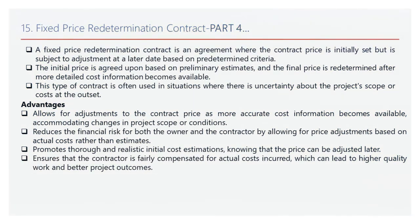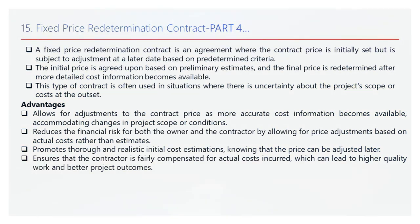Advantages. Flexibility for adjustments: as more accurate cost information becomes available, the contract price can be adjusted to reflect actual conditions, accommodating changes in project scope or external factors. Reduces financial risk: it reduces the financial risk for both the owner and the contractor by allowing adjustments based on actual costs rather than preliminary estimates. Realistic initial cost estimations: this approach promotes thorough and realistic cost estimations, knowing that adjustments can be made if necessary. Fair compensation for contractors: it ensures the contractor is fairly compensated for actual costs incurred, leading to higher quality work and better project outcomes.